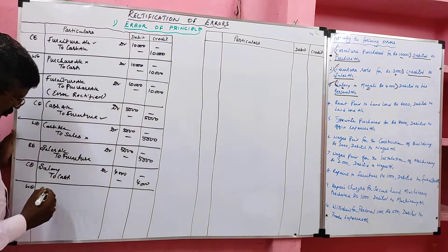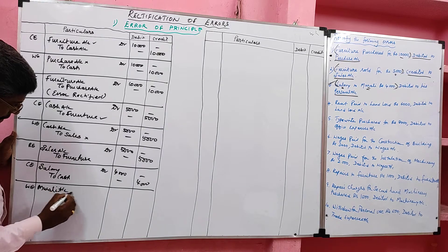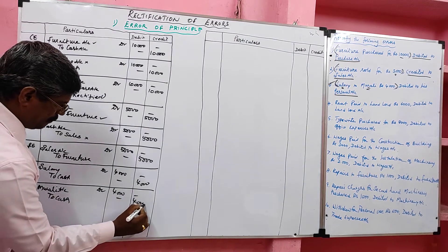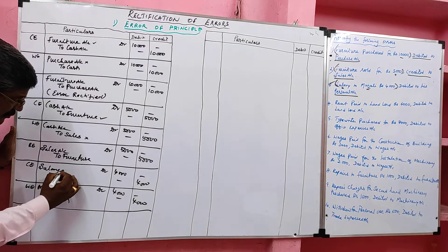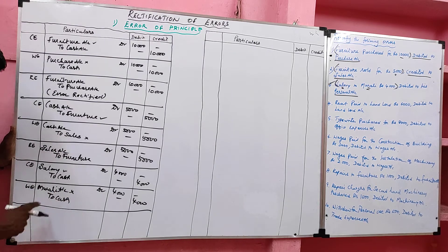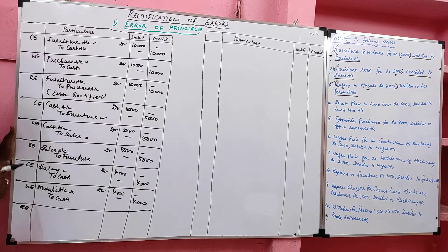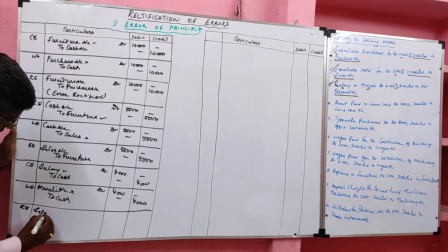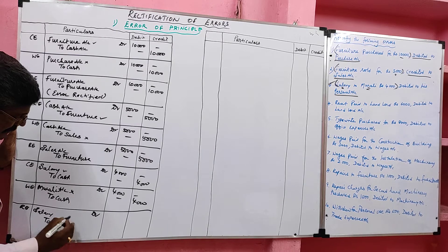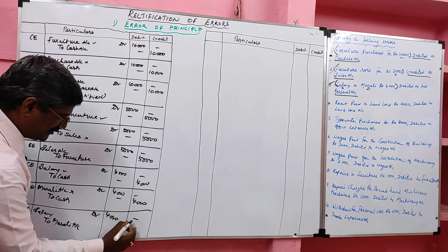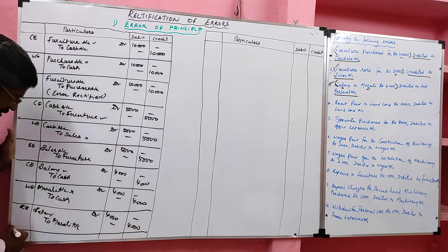The wrong entry was: Moraly account debit to cash. This is called error of principle. For rectification, we should give debit to salary account. To cancel Moraly's account, since it was on the debit side, it goes to the credit side. Rectified entry: salary account debit to Moraly account, 4,000. Narration: error rectified.